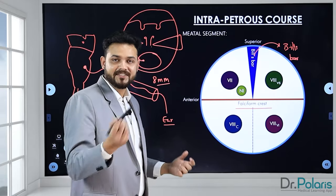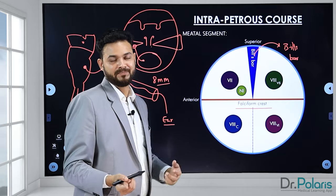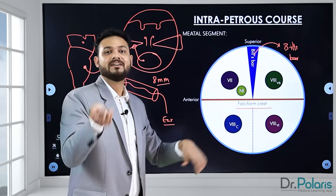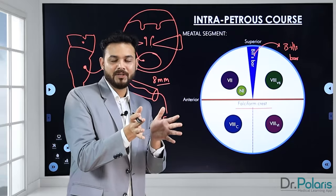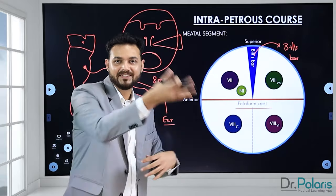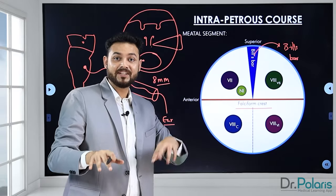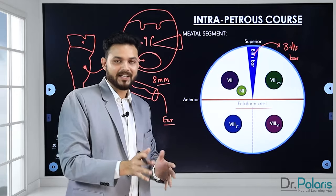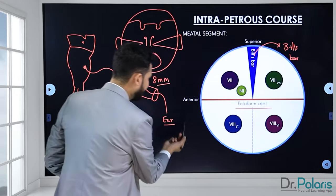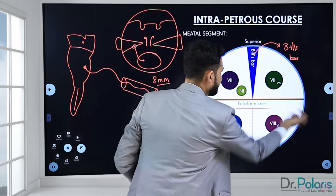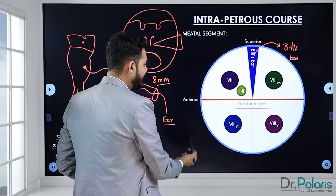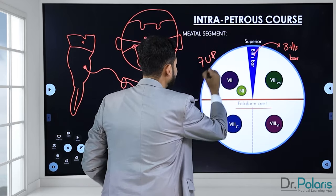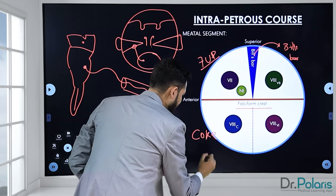Two important nerves go through the internal acoustic meatus: the seventh nerve — the facial — and the eighth nerve, the vestibulocochlear. The vestibulocochlear divides into the superior vestibular nerve, inferior vestibular nerve, and the cochlear division. Cochlear relates to hearing; vestibular relates to balance. Anteriorly and posteriorly: there is a famous mnemonic — 'Seven Up and Coke' — to remember their positions.